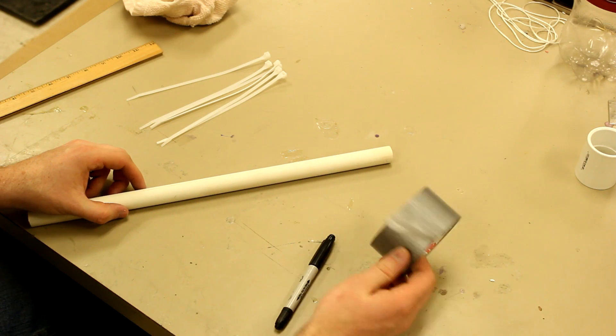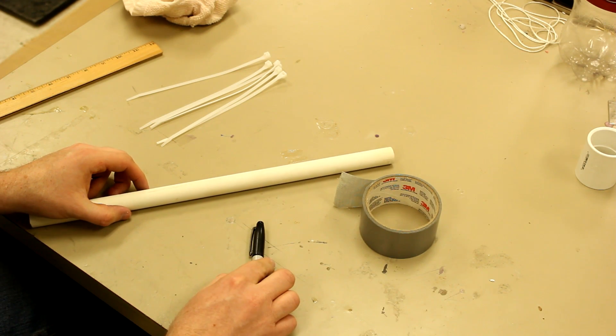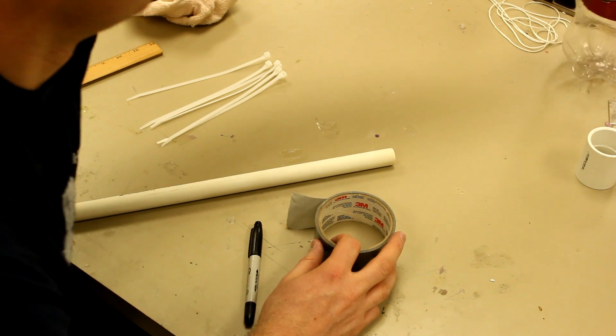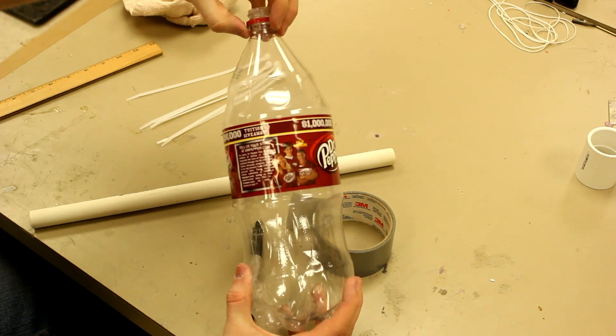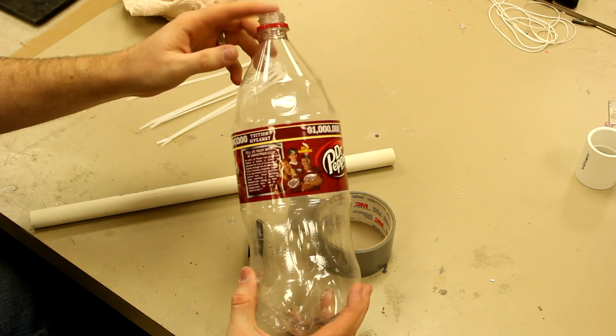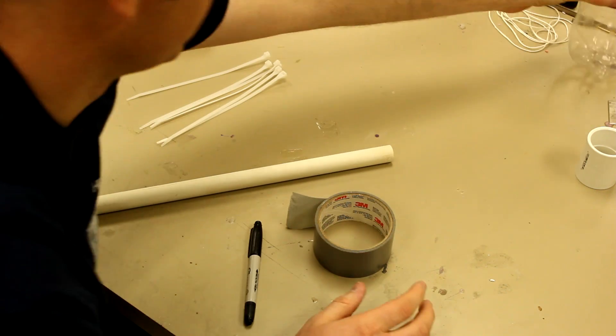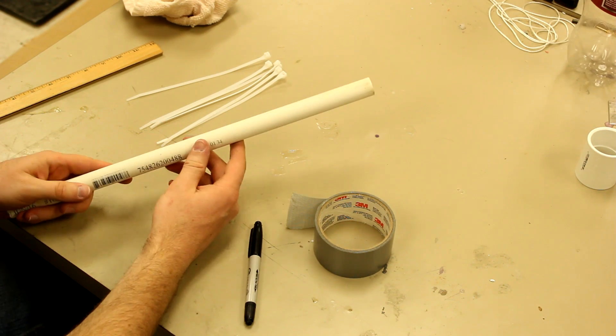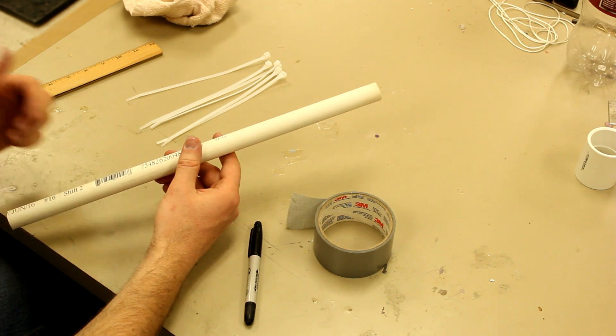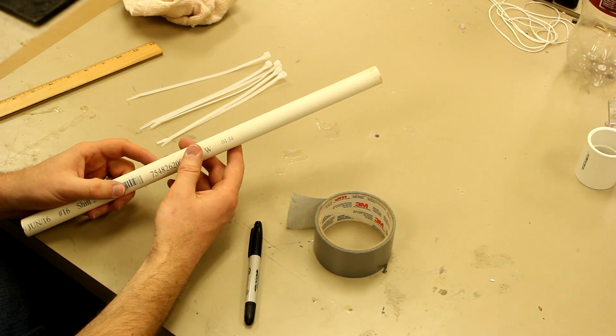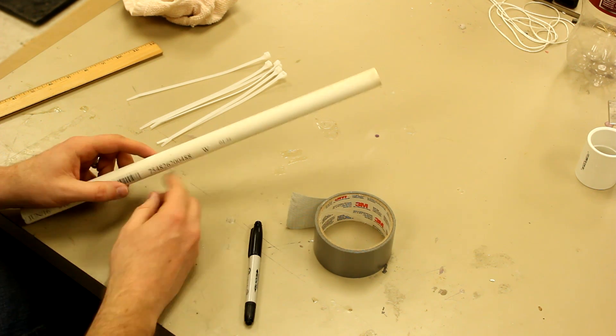Alright, the next step is to make your trigger mechanism. The way we're going to do that is use these wire ties to grab onto this flange of the bottle when it's on the launch rail. Now this is just a scrap piece of PVC I have. You can use your launch rail or any other piece of one half inch PVC for this next step. We're just going to use it as a reference.